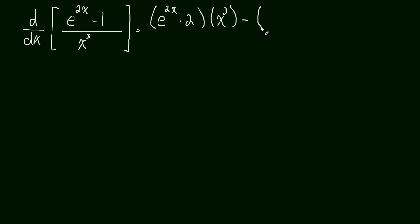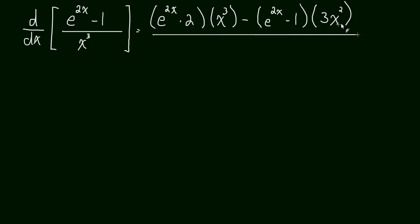Then we repeat the numerator — so e to the 2x minus 1 — times by the derivative of the denominator, which is just going to be 3x squared, all over the denominator squared. So this is x cubed, squared.